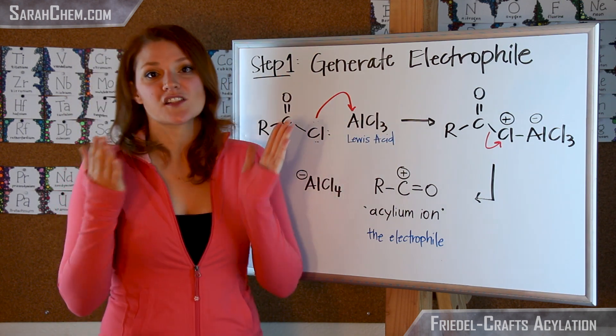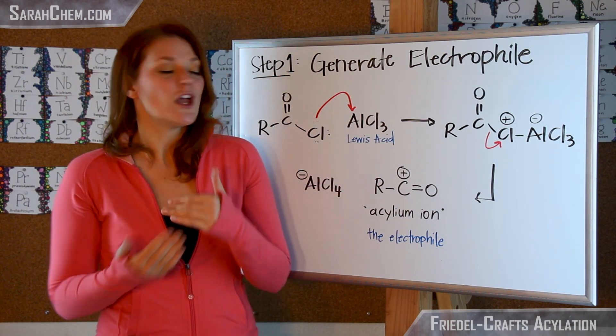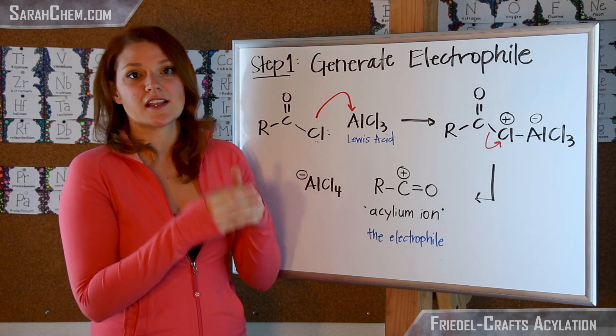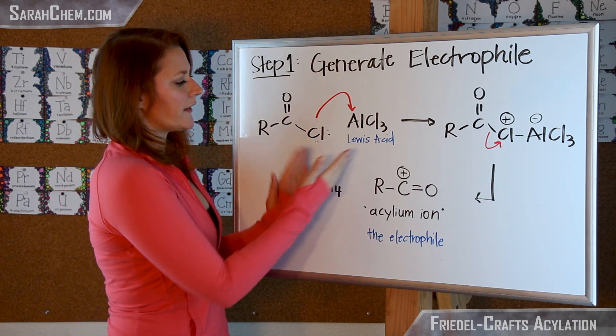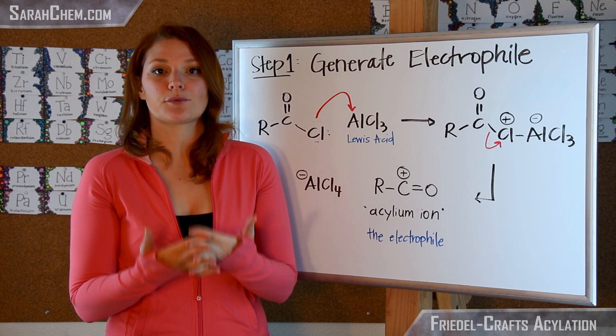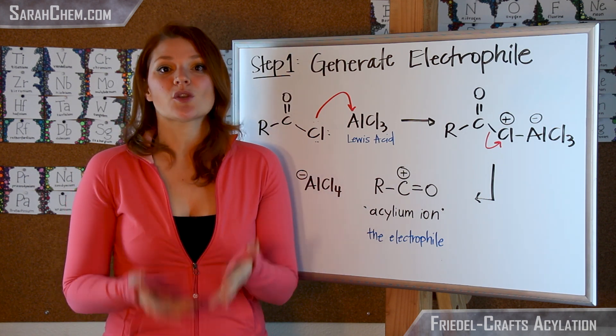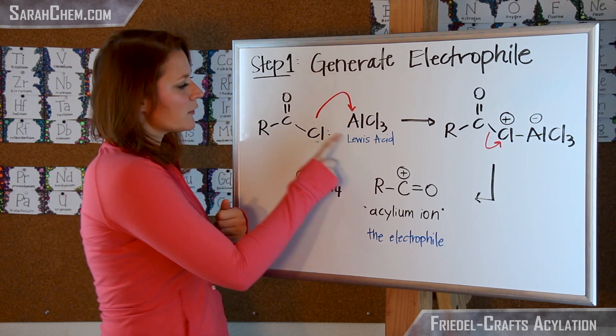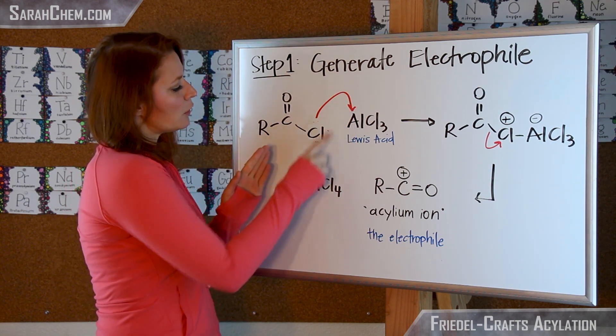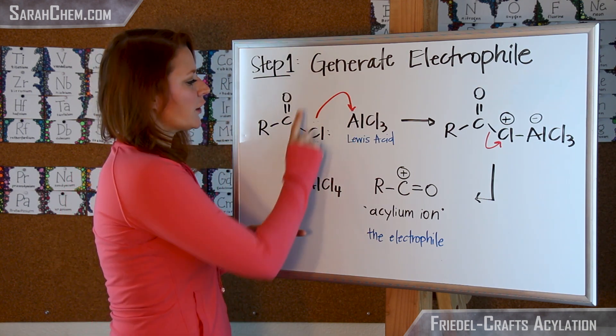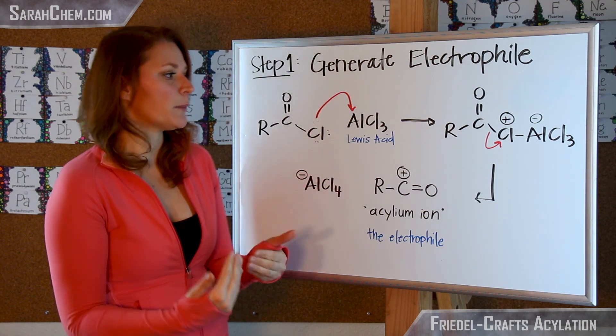So that's what step one here is, the generation of the electrophile. So what we have from the perspective of the acyl chloride is we have our acyl chloride, and we're going to react this with AlCl3, which is a Lewis acid. Now remember, Lewis acids are able to accept an electron pair, and that's what this aluminum is going to do. This chloride has three lone pairs on it. It's going to use one of them to come and attack that aluminum.